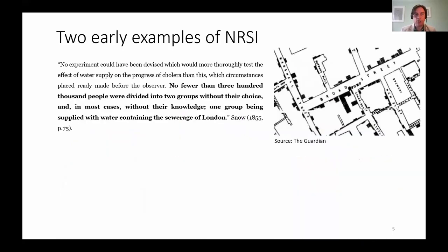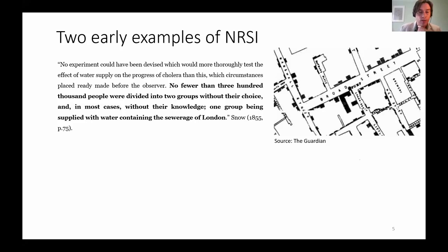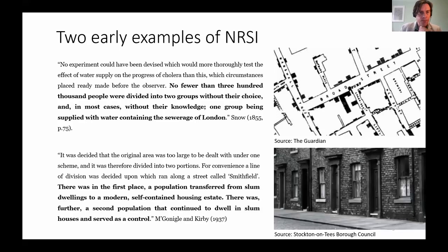There is actually a very long tradition of non-randomised studies of interventions in public health. The most famous — and indeed the study that started the field of epidemiology as far as I'm aware — is the John Snow study during the 1854 cholera epidemic in London, where he conducted a study of mortality in streets covered by water pipes provided by different water companies. Some of those water companies were inadvertently providing households with sewage-contaminated water. There is also another study from the 1920s of a slum upgrading — McGonigal surveyed households in Stockton-on-Tees, a town in Northern England, and measured effects on nutrition.